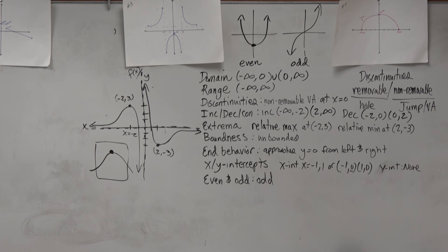Even and odd is basically looking at symmetry. This function is even because it's symmetrical about the y-axis. If a function is symmetrical about the y-axis, it's even. If the function is symmetrical about the origin — meaning you flip it about the y-axis and then flip it about the x-axis and get the same graph — it's odd. Is the right side the same as the left side in this example? No, so it's not even. But if I flip it about the y-axis and then the x-axis, do I get the exact same graph? Yes — so this is an example of an odd function.